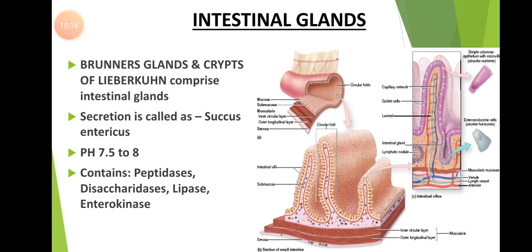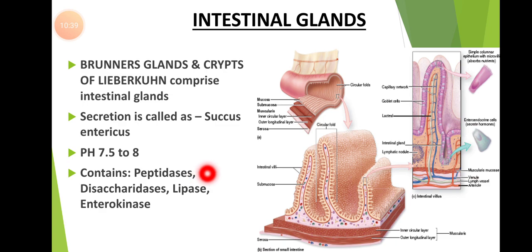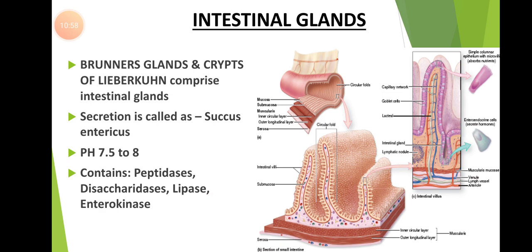Along with these, a hormone activator enterokinase is also secreted. The peptidases include tripeptidases, dipeptidases, and aminopeptidases, which are responsible for the digestion of proteins. The disaccharidases include sucrase (also called invertase), maltase, and lactase, which are responsible for the digestion of carbohydrates. Lipase is responsible for the digestion of fats. Enterokinase is an enzyme activator.